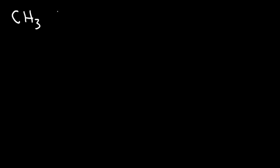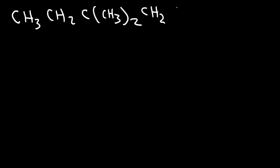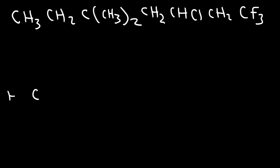Now let's consider one more example: CH3, CH2, C, CH3 times 2, CH2, CH2, CH, Cl, CH2, CF3. Go ahead and work on that example. Starting with the carbon on the left — we have three hydrogens attached to it. And then we have a CH2, so a carbon with two hydrogens.